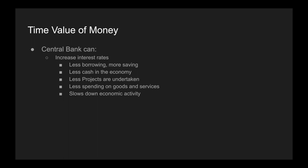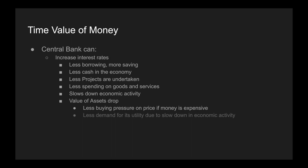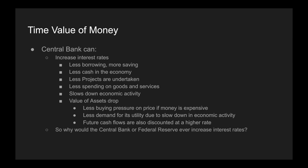Both these things together result in the economy slowing down. When the economy slows down and we've got less cash in the system, we're going to see the value of assets drop. Not only is there less buying pressure on the price if money is expensive, but there's also going to be less demand for whatever utility it's bringing due to the slowdown in economic activity, and the future cash flows will be discounted at a higher rate. Why would the central bank — or in America's case, the Federal Reserve — ever increase interest rates? The answer is to combat inflation, which means we need to understand inflation.